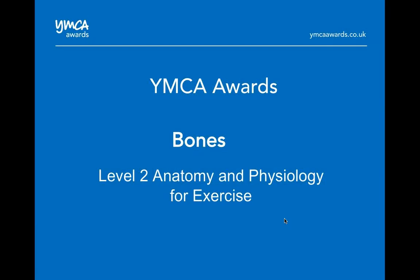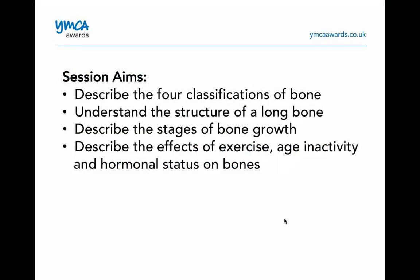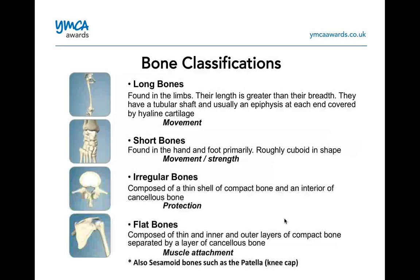The next section is the bones themselves. Looking at the classification of bones — the structure of a long bone, and the stages of bone growth, which is important because you will get questions on that. We've got different classifications: long bones, short bones, irregular bones, and flat bones. Long bones are found in the limbs; their length is greater than their breadth. They have a tubular shaft and usually an epiphysis at the end covered by hyaline cartilage, and they're used for movement — like your upper arm bone or femur.